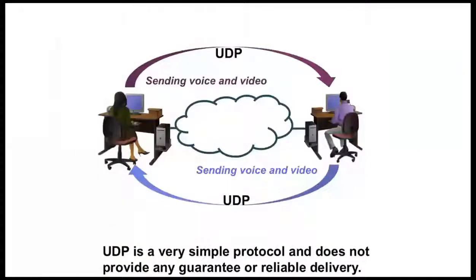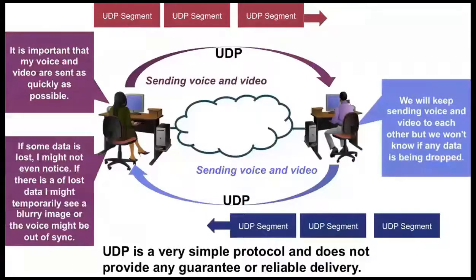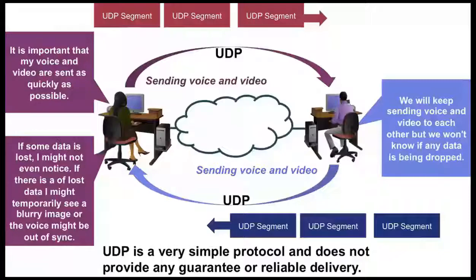UDP is a simpler protocol used to send data as quickly as possible, even if some data doesn't get delivered. Network applications such as those used for sending voice and real-time video can sacrifice some data loss in order for the data to be delivered as quickly as possible. UDP does not include any functions for reliability — for example, there are no sequence numbers in the UDP segments.